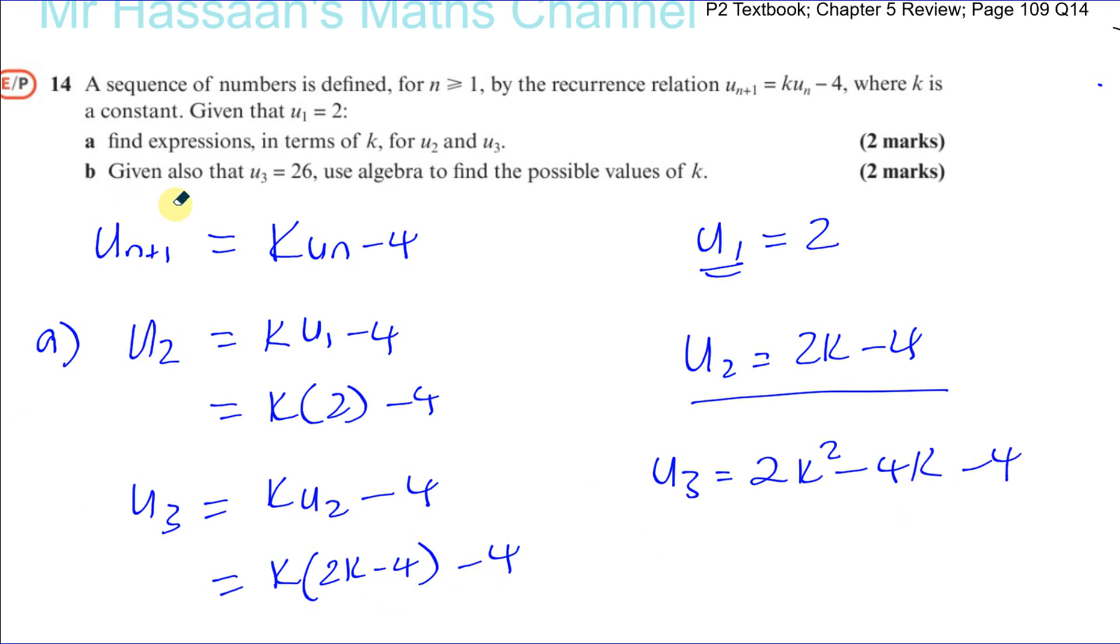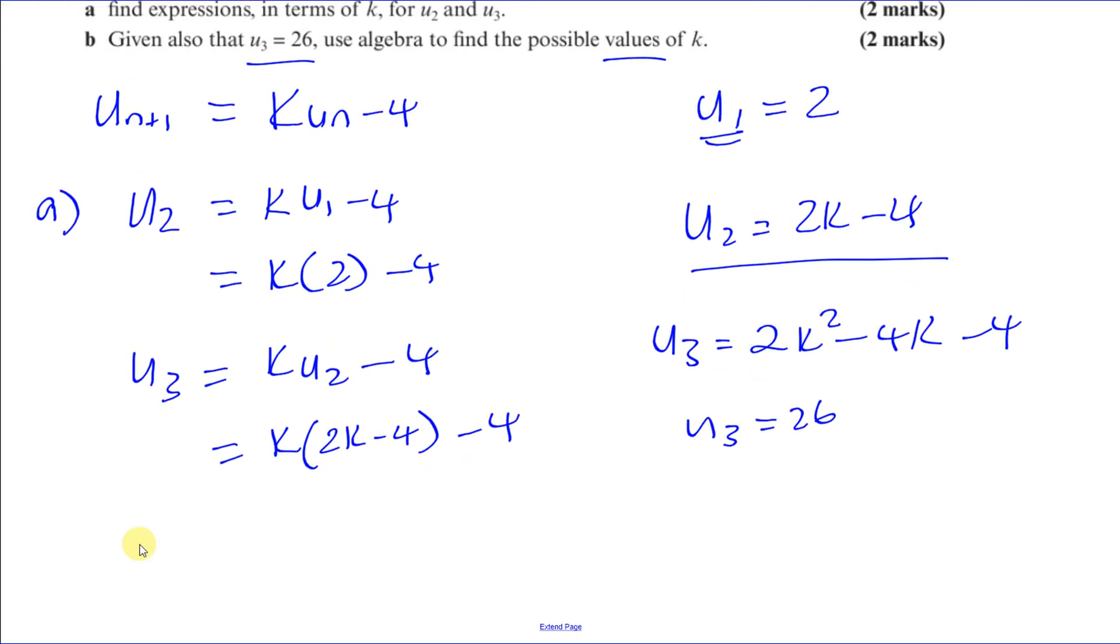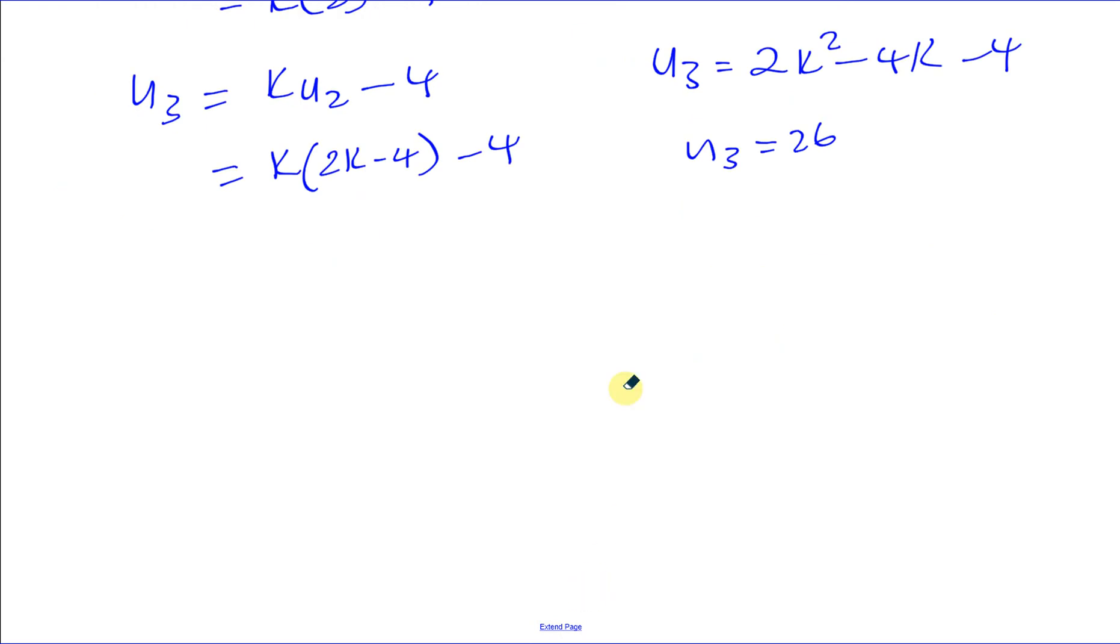And then part b says, given also that u 3 equals 26, use algebra to find the possible values of k. So we also know that the value of u 3 is equal to 26. So we can find out what k is now, can't we?